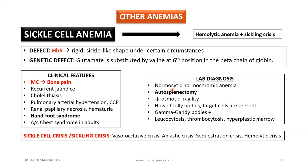The sickle cell crisis (sickling crisis) includes several independent acute conditions: vaso-occlusive crisis, aplastic crisis, sequestration crisis, and hemolytic crisis.